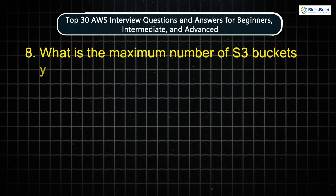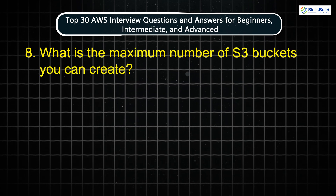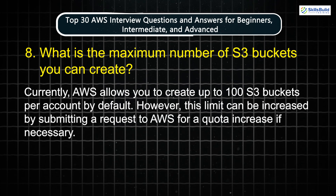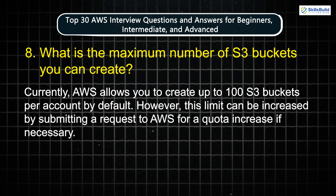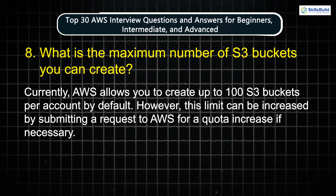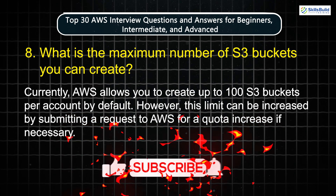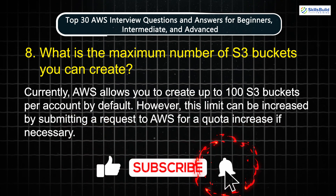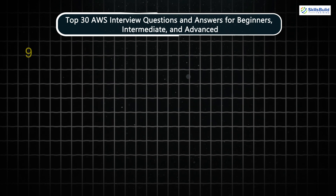Question 8: What is the maximum number of S3 buckets you can create? Currently, AWS allows you to create up to 100 S3 buckets per account by default. However, this limit can be increased by submitting a request to AWS for a quota increase if necessary.